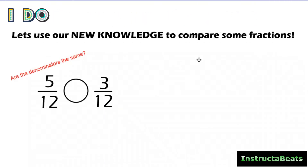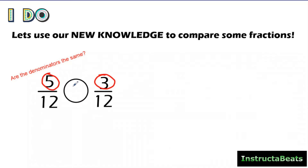Here's our I-do problem. Let's use our new knowledge to compare some fractions. The question I'm always going to ask myself first is: are the denominators the same? Here I have 12 and 12, so they are the same. If the denominators are the same, all we have to do is look at the numerators. What's bigger, 5 or 3? Obviously 5 would be greater than 3. When the denominators are the same, it's very easy — we can just look at the numerators and compare them.